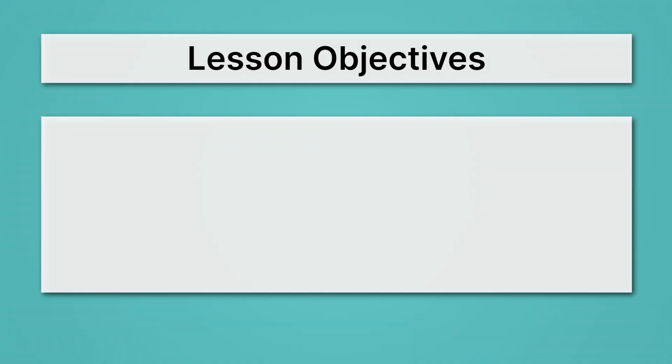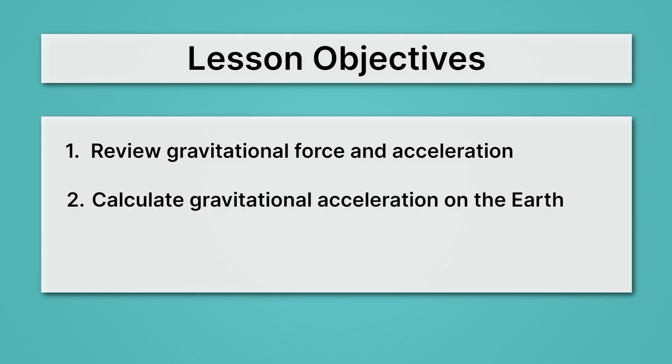Let's begin by reviewing our lesson objectives. First we'll review gravitational force and acceleration, and basically be reviewing the paradox. That it looks like gravitational force depends on mass, while acceleration doesn't. How do we fit these together? Then we'll calculate gravitational acceleration on the Earth and actually show it doesn't depend on mass. We'll calculate gravitational acceleration on the Moon and show the same thing. And at the end, we'll quickly resolve our paradox.